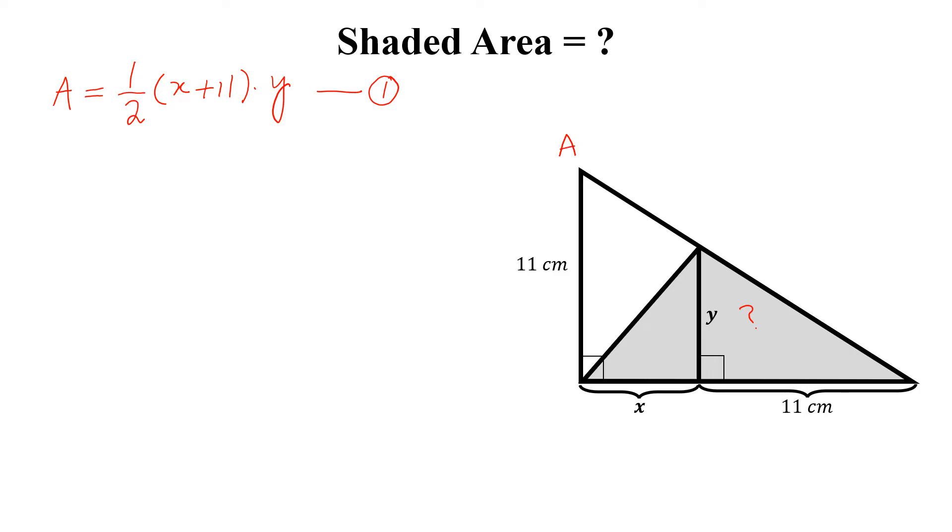Let this is A, this is B, this is C, this is D and this is E. If we look at the triangle, triangle ABC and triangle DEC, these two triangles are similar.